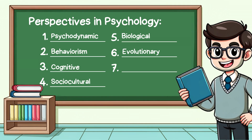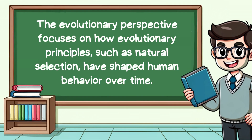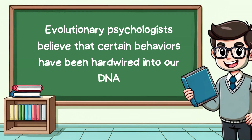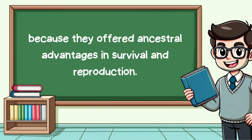Sixth, we have the evolutionary perspective. This approach focuses on how evolutionary principles, such as natural selection, have shaped human behavior over time. Evolutionary psychologists believe that certain behaviors have been hardwired into our DNA because they offered ancestral advantages in survival and reproduction.